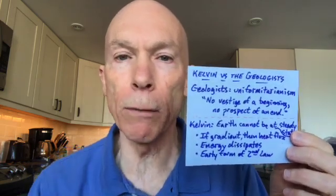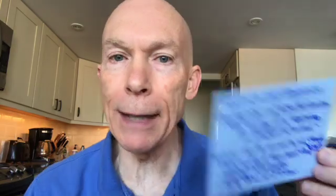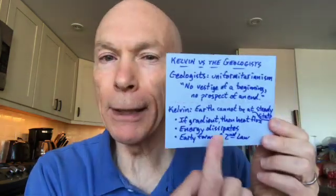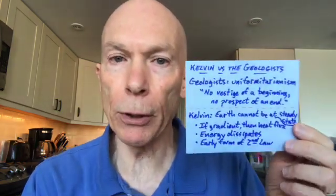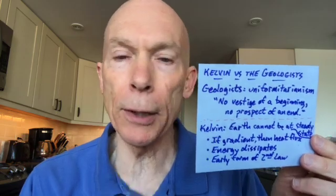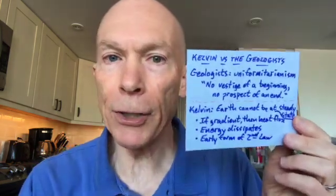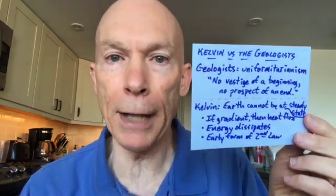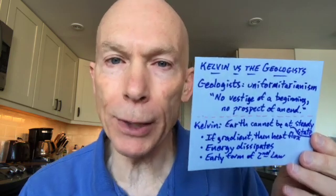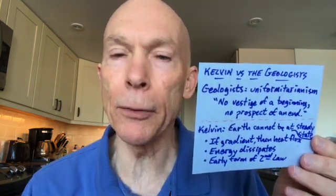The Earth was uniform over a long time. William Thompson looked at that and said this is not true — this violates the laws of thermodynamics. What he said was that the Earth cannot be at steady state. Because you have a gradient in the Earth of temperature, you have to have a heat flux. He believed that energy dissipates — this is his dissipation theory of energy, similar to Clausius' theory of entropy. He said that if energy dissipates, eventually the whole Earth will cool off over a long enough time down to zero. This gets into an early form of the second law of thermodynamics: that a gradient dissipates over time, or as Clausius said, the entropy of an isolated system increases over time.